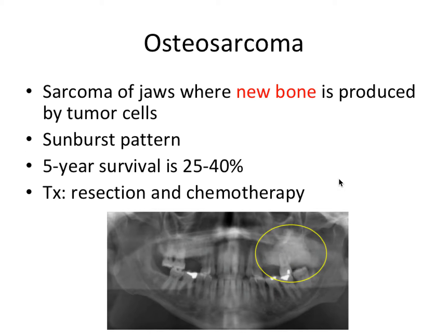First we have osteosarcoma, which is a sarcoma of the jaws. Sarcoma means a connective tissue malignancy where new bone is produced by tumor cells. If we're seeing new bone being deposited, we expect a radiopacity because it'll be more dense. A sunburst pattern is a common term associated with this type of radiopacity. The five-year survival is only 25 to 40 percent — this is a pretty deadly cancer. Treatment would be resection and chemotherapy.